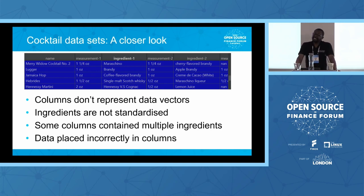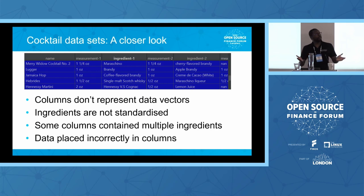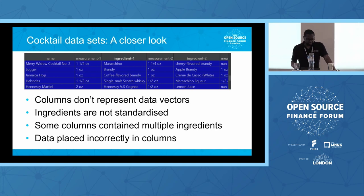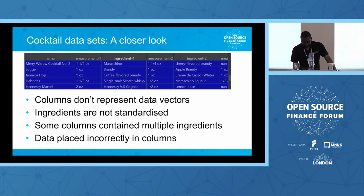As with any data set, everyone has their own idiosyncrasies. In the one I worked with, a single ingredient column would contain multiple ingredients — for example, one ounce with both light rum and dark rum listed together — and you need to handle that properly when mapping to the column with the right volume. Also, some data was placed incorrectly: the measurement was put in the ingredient column and vice versa, which was just annoying.